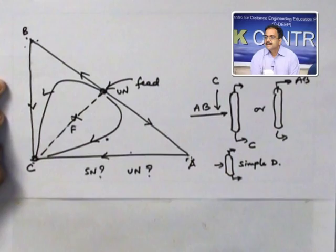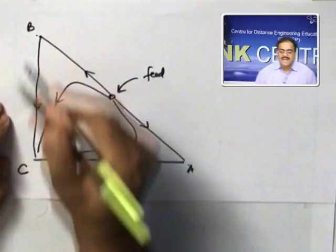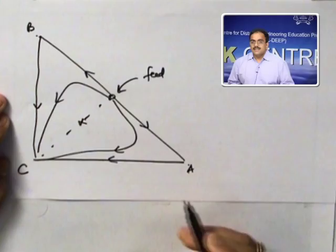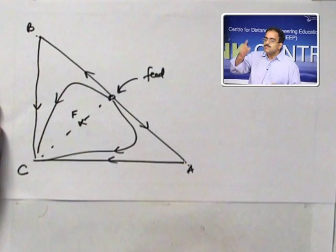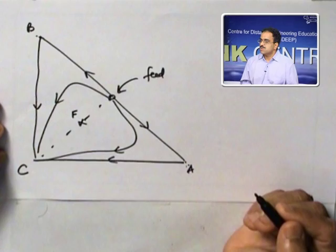That means what they are doing commercially is something different from a simple distillation column. What is that difference? I am interested in A and B. This is going to be my resultant composition. Why am I not able to separate A and B? Because A and B are saddles here. They are saddles and I cannot withdraw saddle composition from top and bottom in a normal simple distillation column. That is the main reason I am not able to separate A and B in pure form.